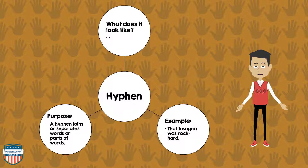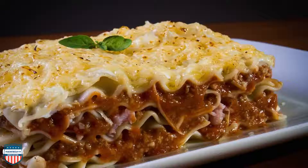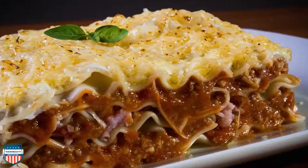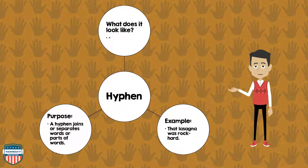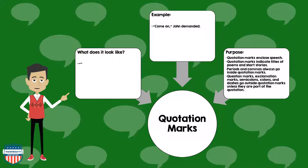Next, let's talk about the hyphen. The hyphen is a dash. An example of a hyphen in use: that lasagna was rock-hard. What is the purpose of a hyphen? A hyphen joins or separates words or parts of words.